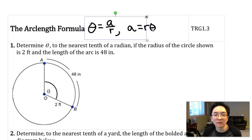Let's take a look at a simple example and see how this works. Determine theta to the nearest tenth of a radian if the radius of the circle shown is 2 feet and the length of the arc is 48 inches. Right away, I noticed we've got two different units, feet and inches, and we want to make that a consistent unit.